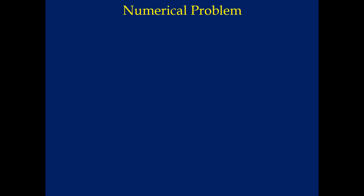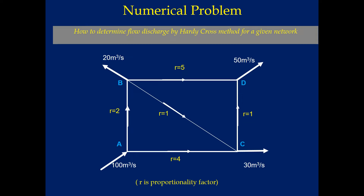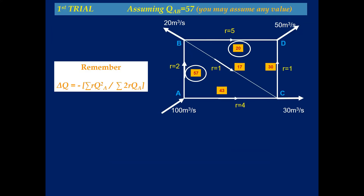In this lecture, we are going to discuss a pipe network A, B, D, and C. The input is given as 100 m³/s at junction A. At junction B, the output is 20 m³/s. At junction D, the output is 250 m³/s, and at junction C, the output is 30 m³/s. R is also given — R is the proportionality factor and depends upon the pipeline.